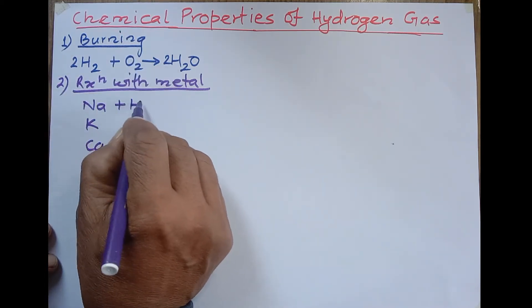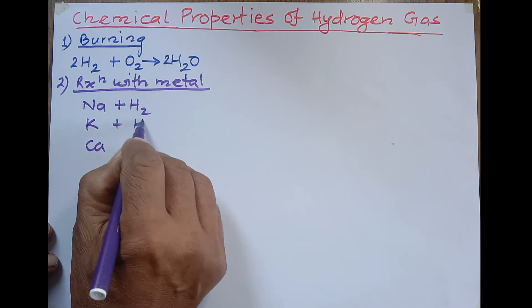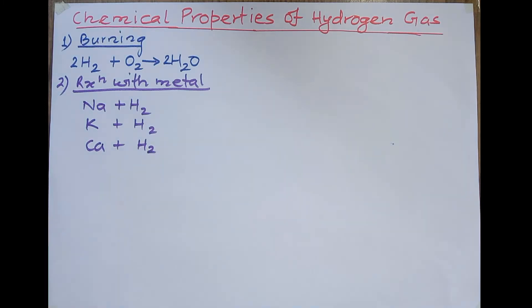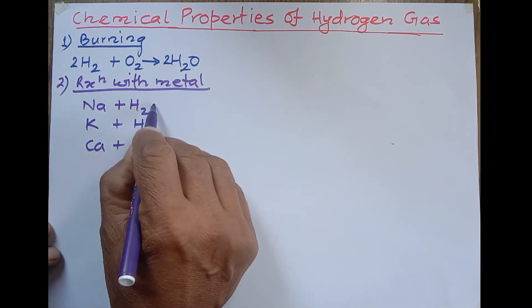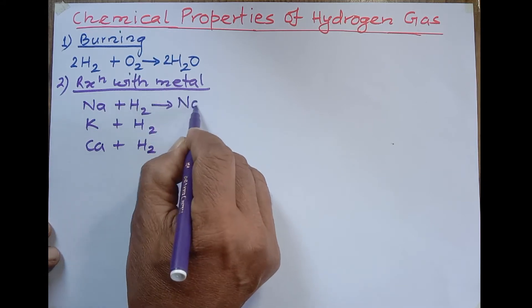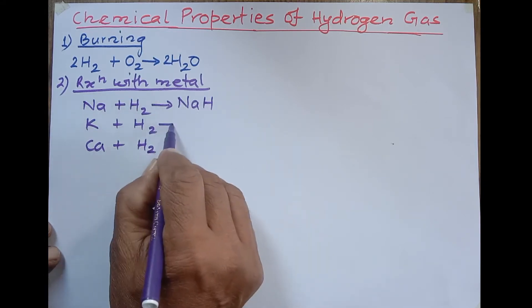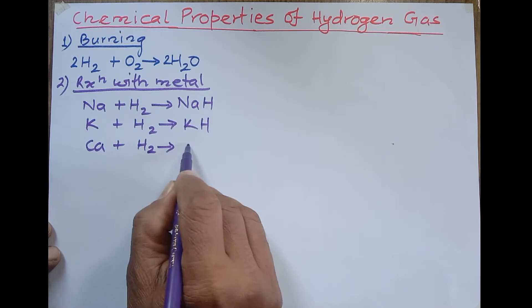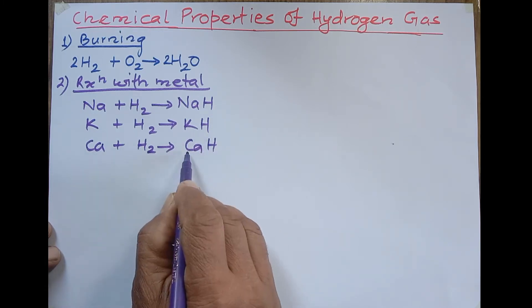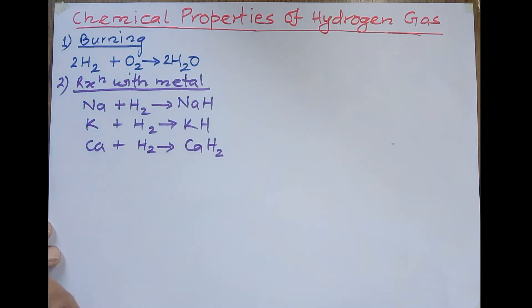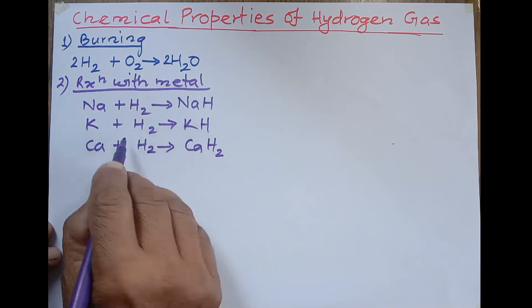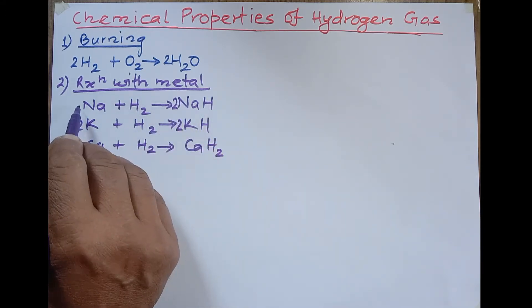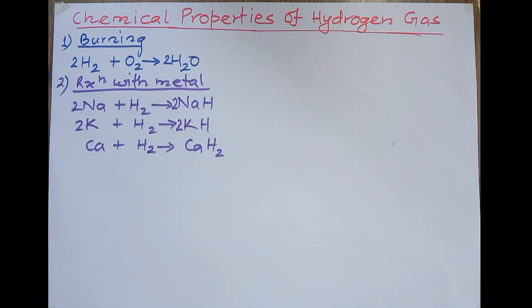They react with hydrogen on heating to form hydrides. Sodium hydride (NaH), valency of sodium and hydrogen both one. Potassium hydride (KH), and calcium hydride (CaH2). Calcium valency two, hydrogen valency one, that's why CaH2. The equations can be balanced: 2Na + H2 → 2NaH, 2K + H2 → 2KH, Ca + H2 → CaH2. This is the reaction with metal.